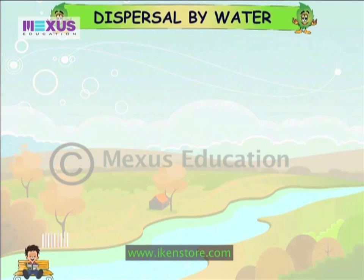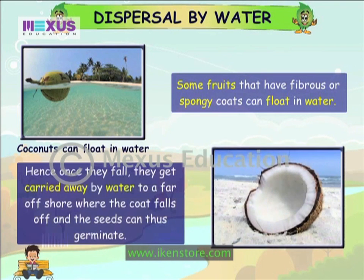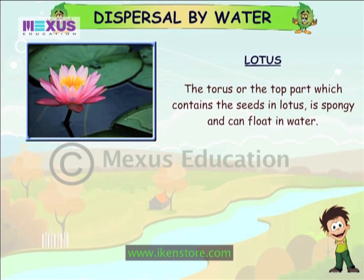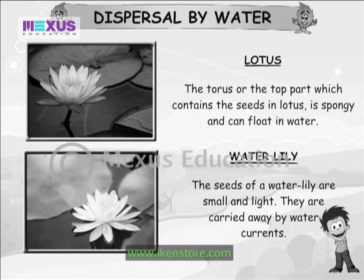Dispersal by water. Some fruits that have fibrous or spongy coats can float in water. Hence, once they fall, they get carried away by water to a far off shore where the coat falls off and the seeds can thus germinate. The top part which contains the seeds in lotus is spongy and can float in water. The seeds of a water lily are small and light and are carried away by water currents.